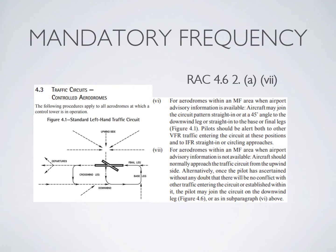If you're going to an airport that has a mandatory frequency in effect, some airports have advisory information available. You'll usually pick that up in the CFS because instead of saying TFC, it'll say RDO, which means radio. When you're broadcasting your intentions on that frequency about five minutes out, you'll probably hear a response. You'll broadcast to 'airport radio' as opposed to 'airport traffic,' and then you'll get information on what runway is actually in use based on the winds, and they'll probably also give you traffic information on whether someone is in the circuit. With that information, you can plan your approach to go directly into the circuit, almost the same way you would if you were at a control tower.